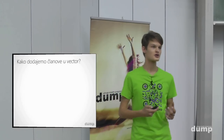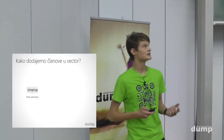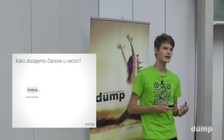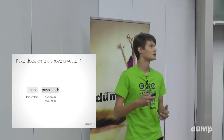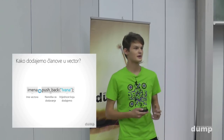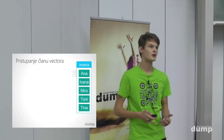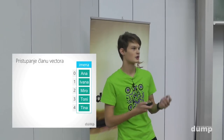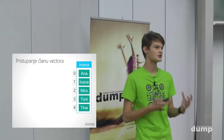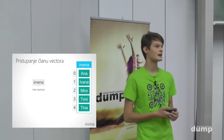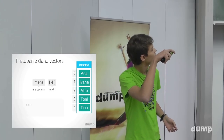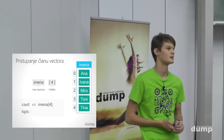Članove u vektor dodajemo tako što prvo navedemo ime vektora, zatim pišemo točku — točka znači da vršimo operacije na tom vektoru — i koristimo naredbu push_back, kojoj prosljeđujemo vrijednost koju želimo dodati na kraj vektora. Članu vektora pristupamo tako što navedemo naziv vektora i u uglate zagrade prosljeđujemo indeks člana — primjerice, ako ispišemo element na indeksu 4, ispisat će nam Tina.